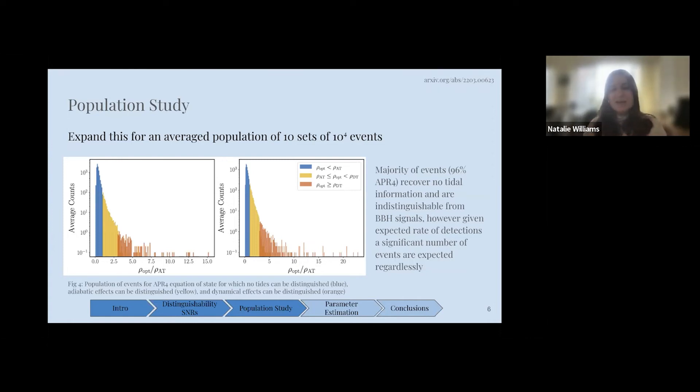In our population, we actually find that the vast majority of events, 96%, recover no tidal information at all. The SNRs that we require are much higher than the optimal SNRs that we get. These are indistinguishable from binary black hole signals. However, keeping in mind the vast amount of events that we're going to be expecting, we would expect about 10^4 events per year, which means that we're looking at about an order of 50 signals per year where we would be able to distinguish these dynamical effects, which is still quite promising.